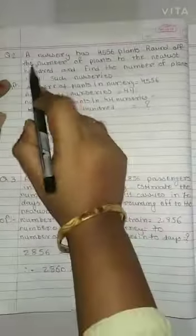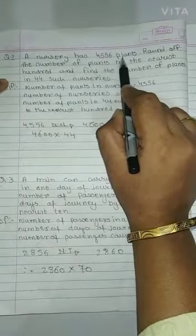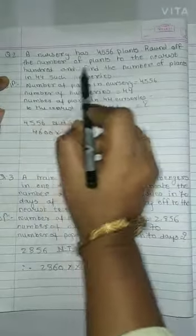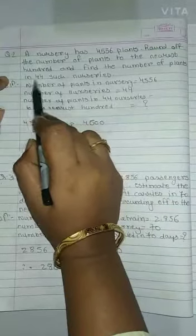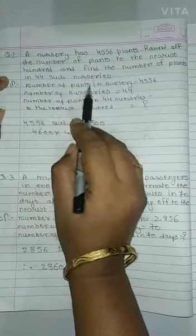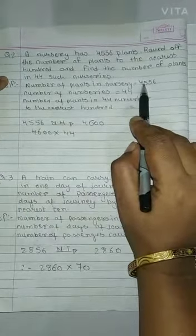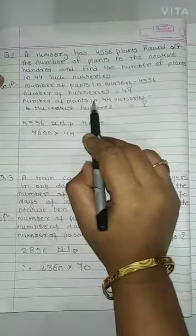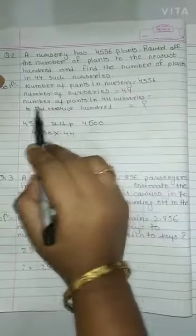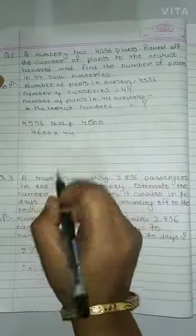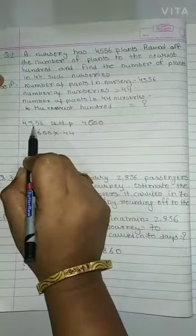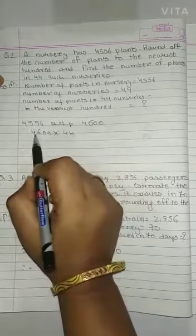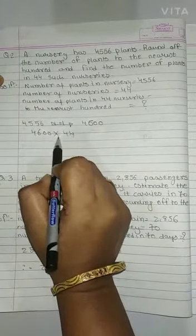Read it carefully. A nursery has 4556 plants. Round off the number of plants to the nearest hundred and find the number of plants in 44 such nurseries. Number of plants in nurseries is 4556. Number of nursery is 44. So 4556 ka nearest hundred is 4600. Therefore 4600 multiply with 44.